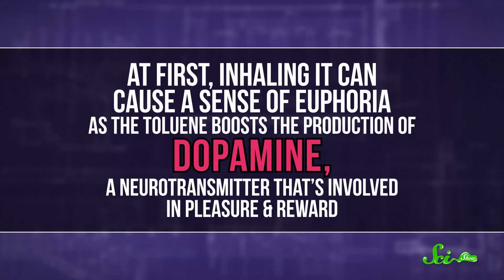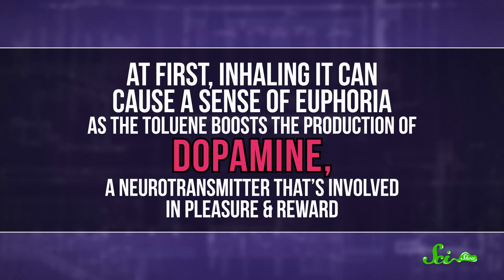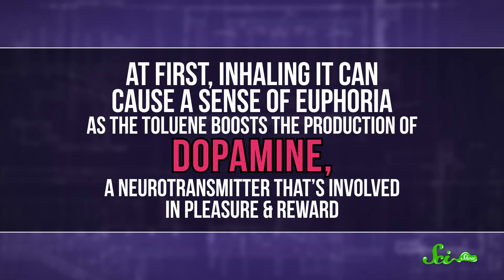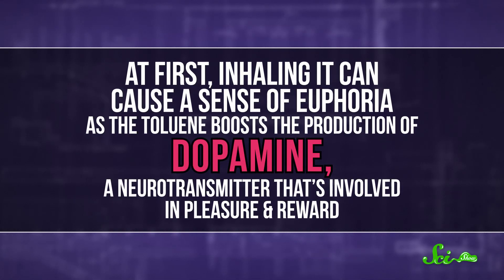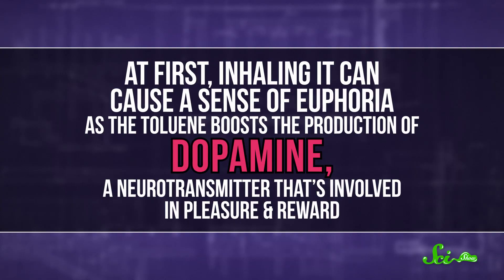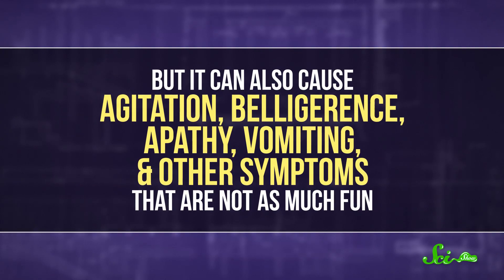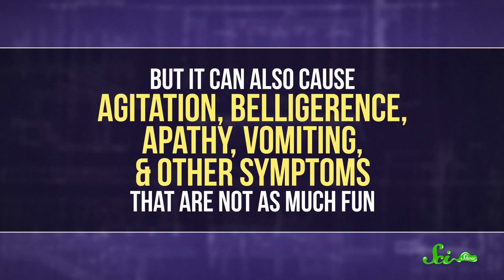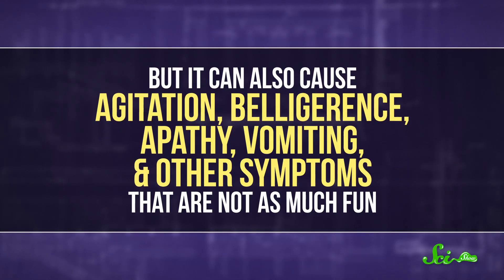In the short term, toluene has a direct effect on the central nervous system. At first, inhaling it can cause a sense of euphoria, as the toluene boosts the production of dopamine, a neurotransmitter that's involved in pleasure and reward. But it can also cause agitation, belligerence, apathy, vomiting, and other symptoms that are not as much fun.